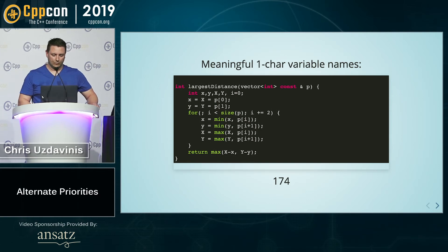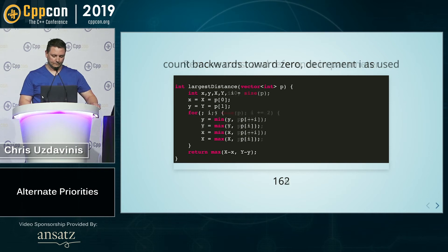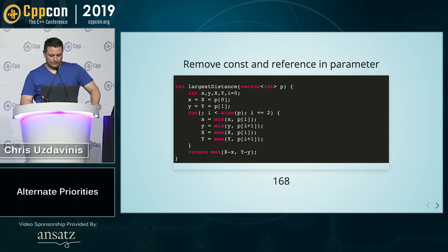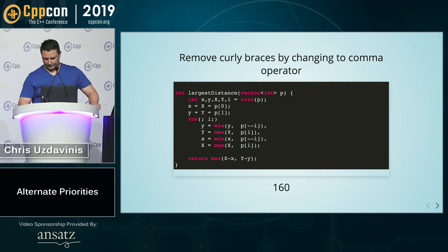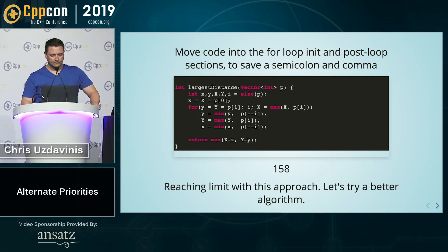The first order of code golf is to use meaningful one-character variable names. We're down to 174 bytes already. Next, we can remove the const and the ref parameter, because we don't care about speed — we care about smallness. We can count backwards and move the decrement into the body, which brings us down to 162. We use excessive use of the comma operator to turn the whole for body into a single statement. That way we can get rid of the curly braces. And we can migrate some code into the for loop itself so that we can save a semicolon and a comma.